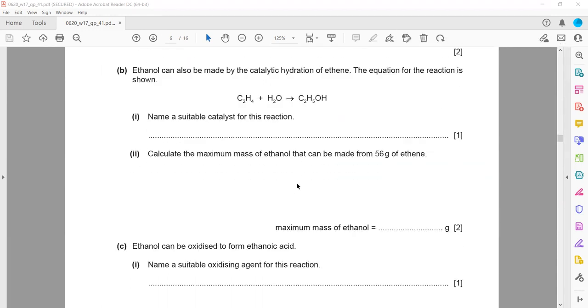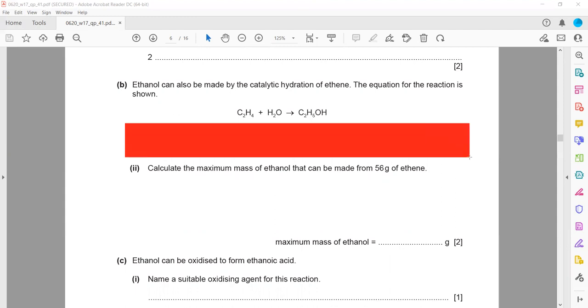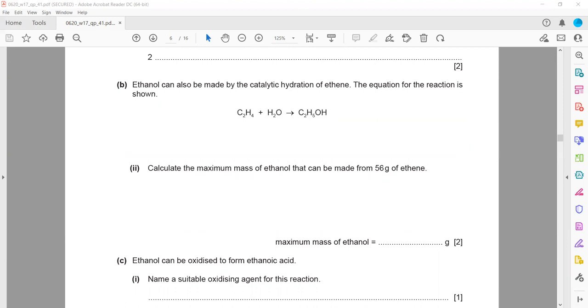Calculate the maximum mass of ethanol that can be made from 56 grams of ethene. If we have 56 grams of ethene, how much ethanol can be made? If mass is given, we can take the mass ratio. The equation is there. Here we have ethene and this one is ethanol.